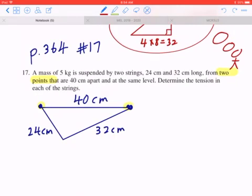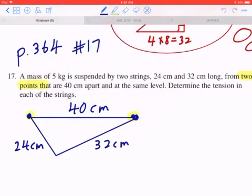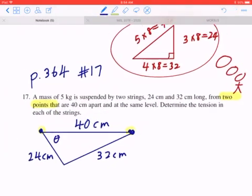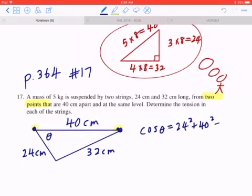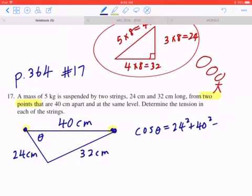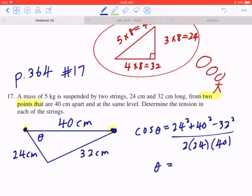You can start with angle theta right here. From grade 10 academic math, you did the cosine law. So cosine theta equals 24 squared plus 40 squared minus 32 squared divided by 2 times 24 times 40. If you work this out, the angle is approximately 53.1 degrees.